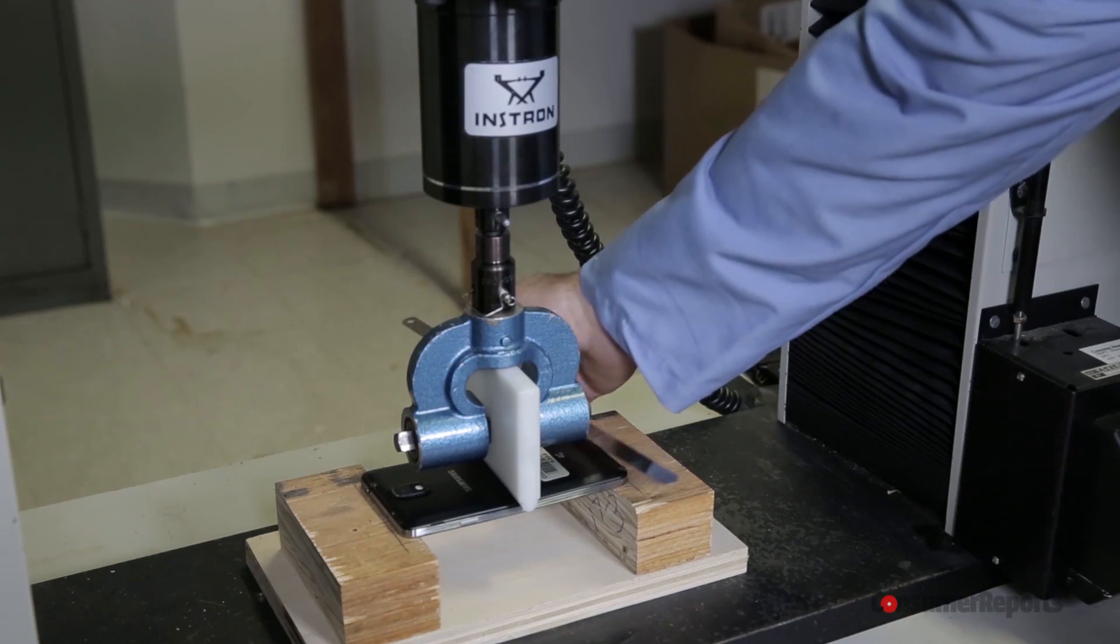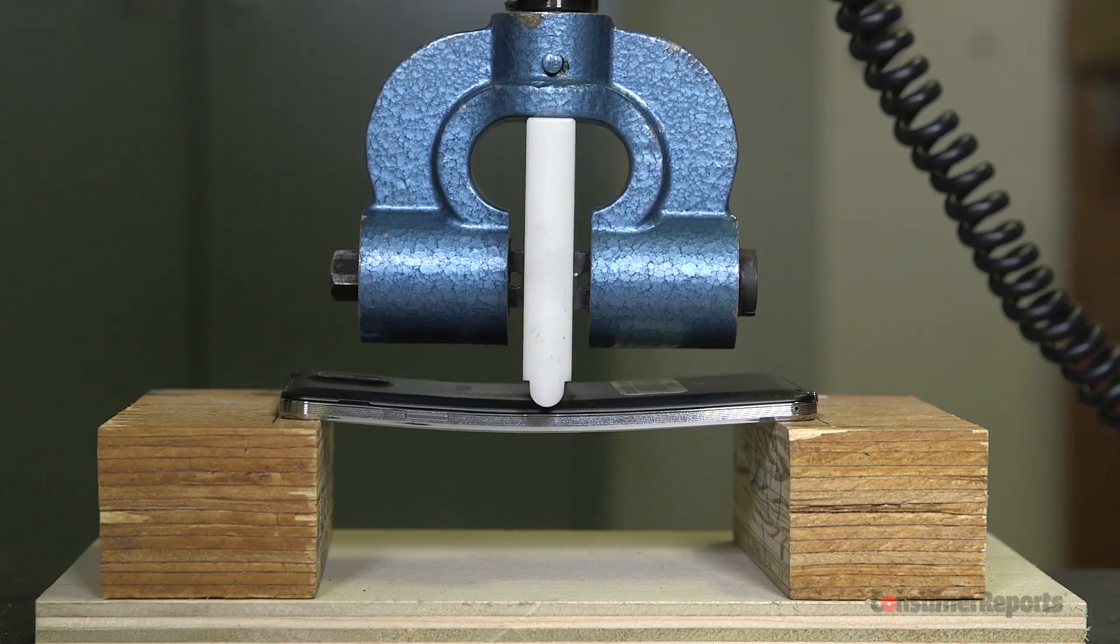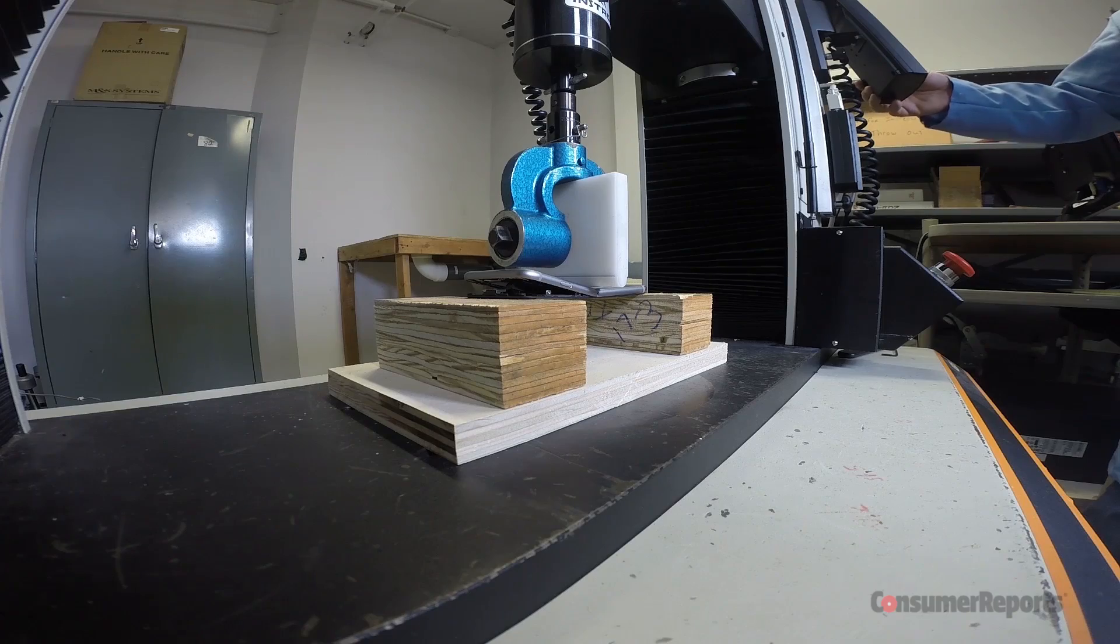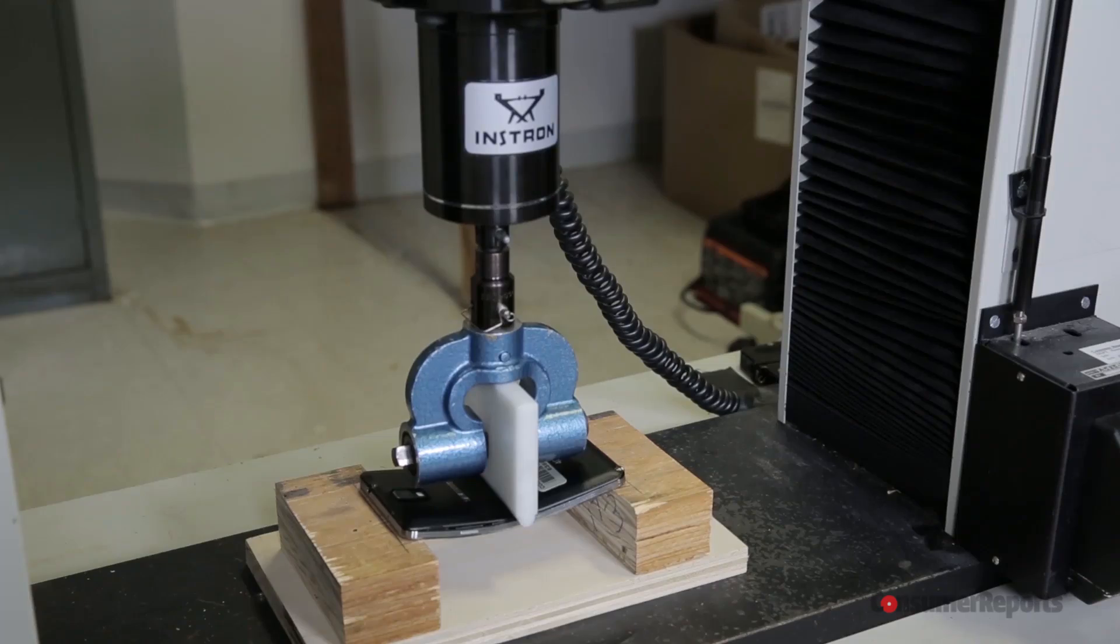Consumer Reports wanted to bring some science to the matter and find out how much force it takes for a phone to bend and not bend back. So we took six smartphones, including the new iPhones, into our labs for stress testing.